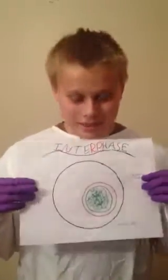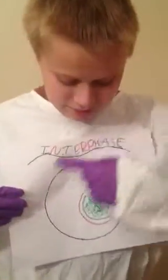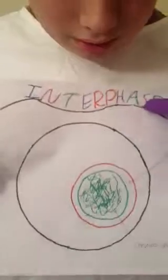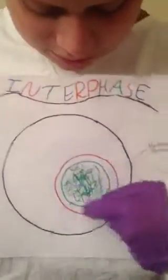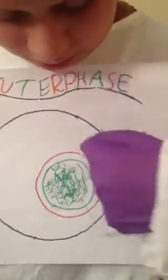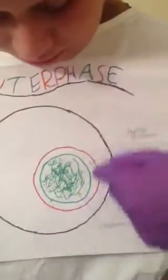The first stage is interphase. As you can see, the cell is in a globular shape, and it grows and develops. The DNA is right here in the green, and the nuclear membrane is right here in the red.